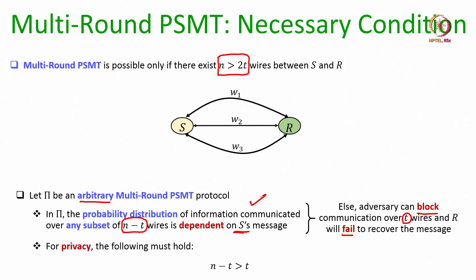So this statement is true — the information over N minus T wires does determine the sender's message. But then for privacy we require N minus T to be strictly greater than T, because if N minus T equals T then adversary can eavesdrop that same amount of information and completely determine the sender's message, violating the privacy requirement. Hence N must be greater than 2T.